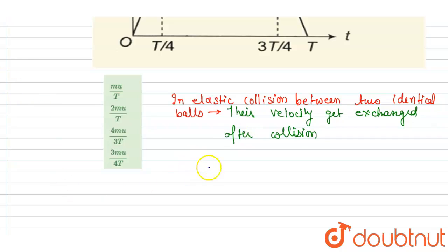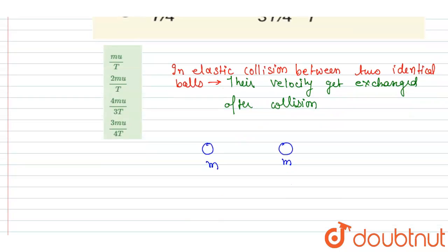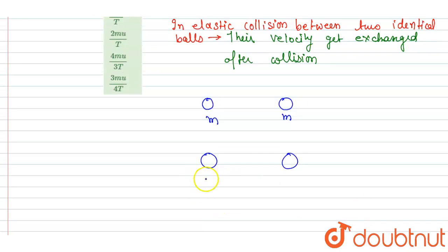If you see initially, this m mass was moving and this m mass was stationary. After collision what will happen? This will remain in stationary and it will start moving with the same velocity in the same direction as that of the first mass.